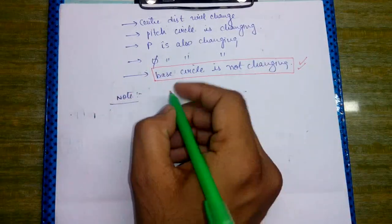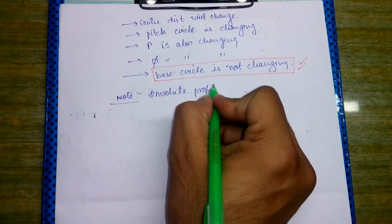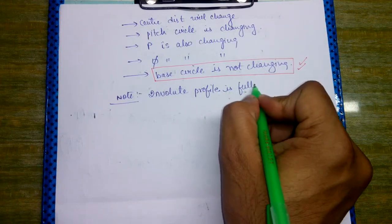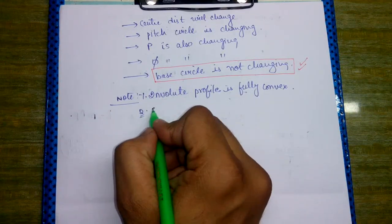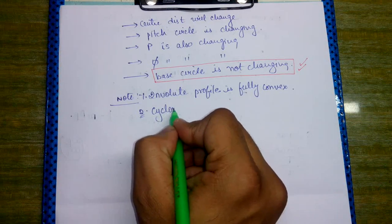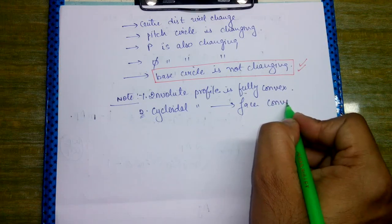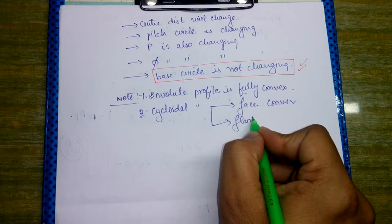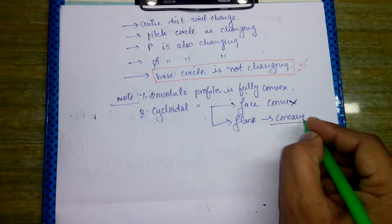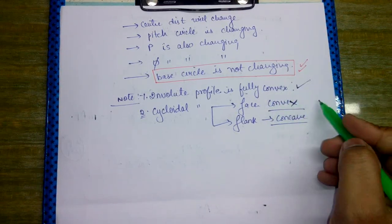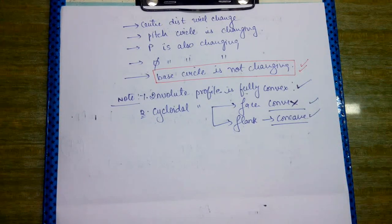Important note: the involute profile is fully convex. For the cycloidal profile, the face is convex and the flank portion is concave. These points have been asked in GATE, ESE, and SSC as one-mark questions.